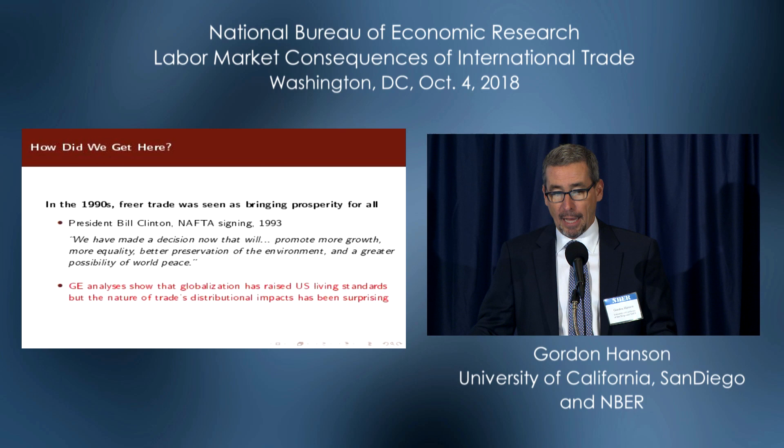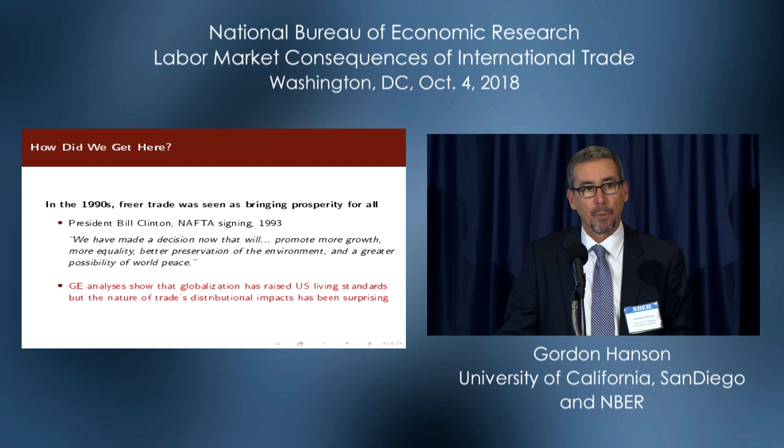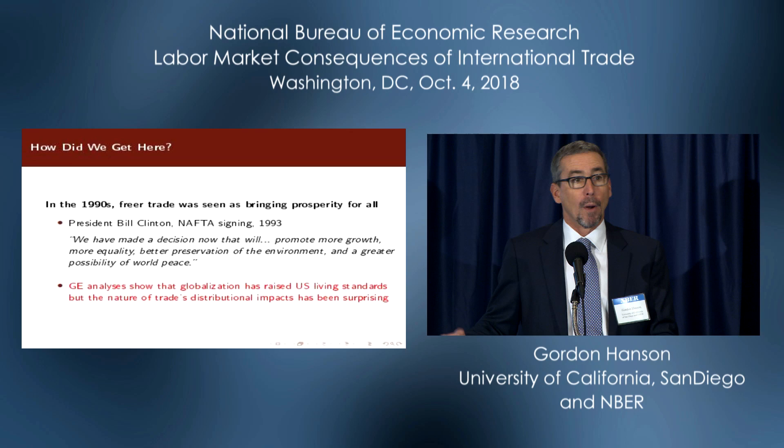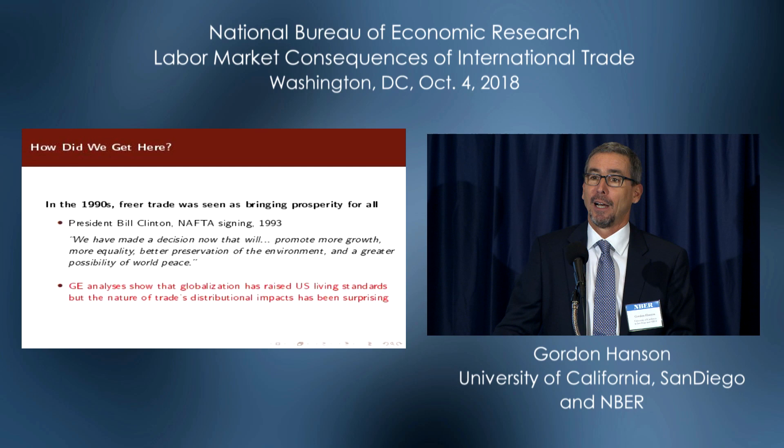To understand how we got here, go back to what we thought globalization was going to deliver us 25 years ago, at the beginning of this great second wave: the fall of the Berlin Wall, trade liberalization sweeping the developing world, and lots of new countries joining the WTO. You look at what President Clinton said about the NAFTA signing — he was promising a lot, not just a couple percent income gains, which is kind of what your standard GE model was going to tell you. It was going to clean up the environment and solve world peace.